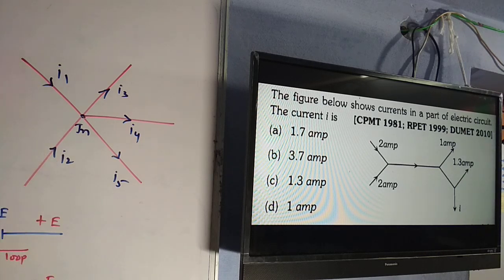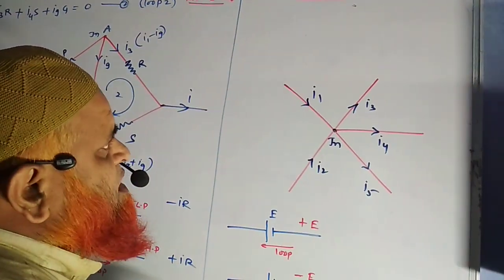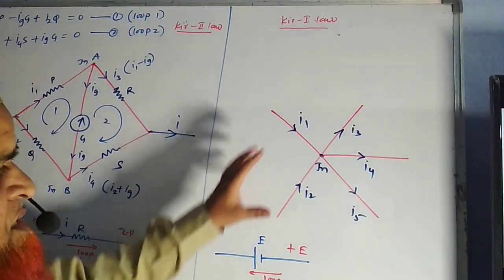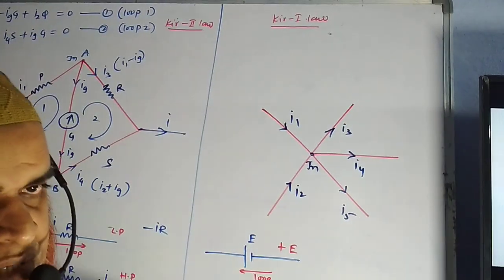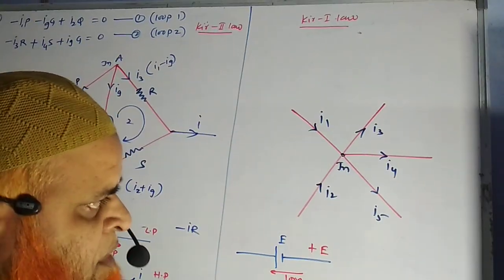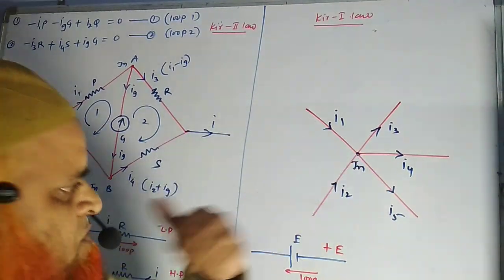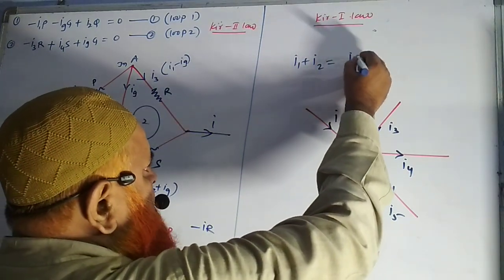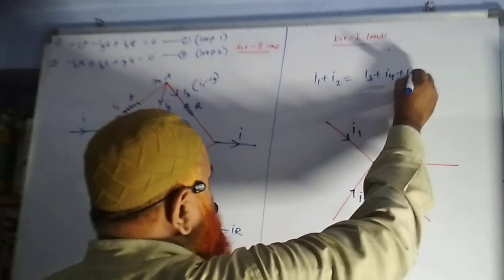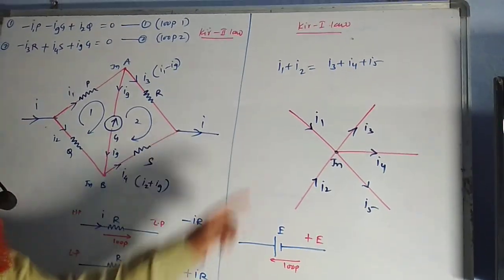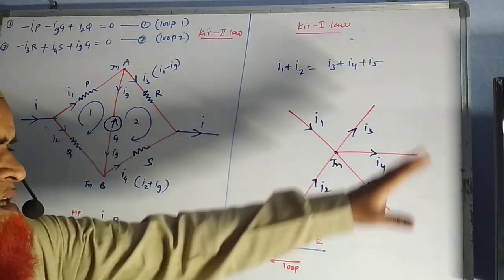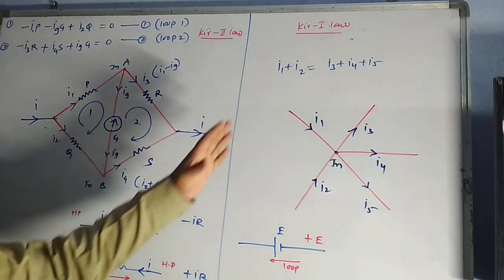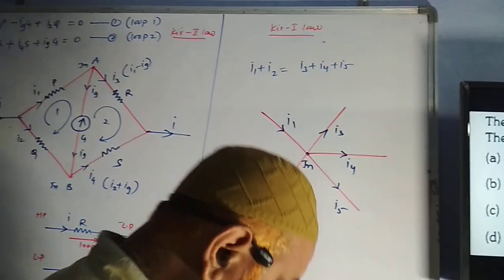To understand Kirchhoff's first law, let us look at this simple circuit. Kirchhoff's first law states: the sum of the currents meeting at a junction is equal to the sum of the currents leaving the junction. So you can write I1 plus I2 equals I3 plus I4 plus I5. These two currents meet at the junction and the three currents leave. This is Kirchhoff's first law.